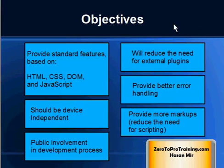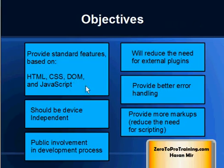So HTML5 will provide the following objectives: mainly it will provide standard features which will be based on HTML, Cascading Style Sheets, Document Object Model, and JavaScript. These are the protocols already implemented right now, and the new HTML5 will provide the same standards that are seen in these protocols.